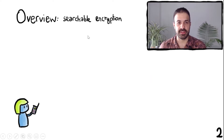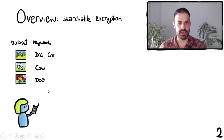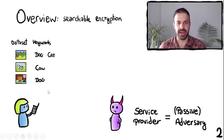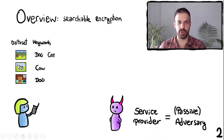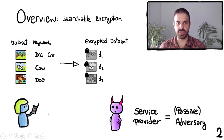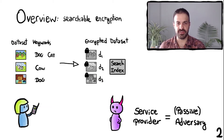Our motivation is the following. Consider a user, Alice, that has a dataset — in this case three images with some keywords attached to them. Imagine this dataset is privacy sensitive and also too expensive to store on Alice's phone. She would like to store her encrypted dataset with a cloud service provider. We consider an honest but curious service provider that follows the protocol but might want to infer sensitive information about the user. Alice can encrypt her dataset and send it to the service provider, but she also wishes to query for documents that have a particular keyword. To achieve this search functionality, she produces an encrypted search index and sends it to the server.